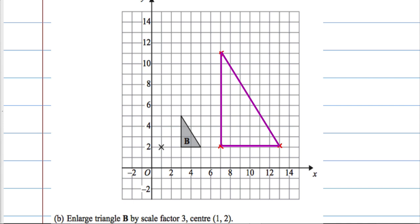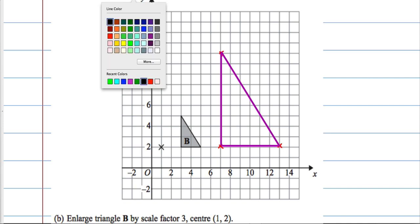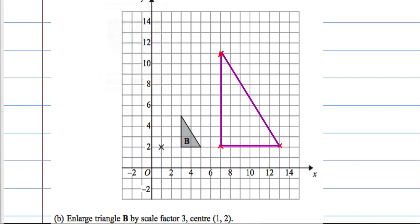A way to check your answer is to ensure that you draw some ray lines back. And they should all converge at the centre of enlargement. You can see that they all do. They all meet at the centre of the enlargement. And that's how you enlarge by a scale factor of 3.